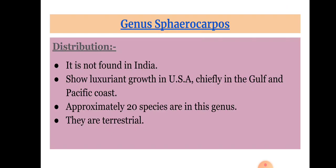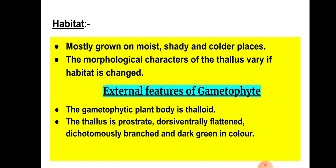Regarding the distribution of Sphaerocarpos: it is not found in India. It shows luxuriant growth in the USA, chiefly mainly along the Gulf and Pacific coasts. This genus is represented by approximately 20 species, and they are all terrestrial — they are not found in aquatic habitats.